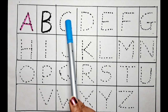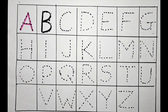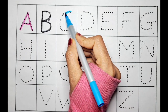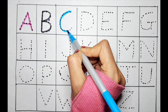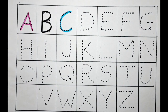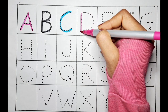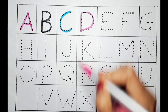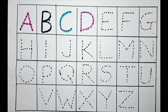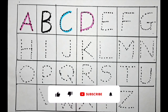Let's do the C with the blue color. C for cat. The next letter is D. Let's do the D with the pink color. D for dolphin.